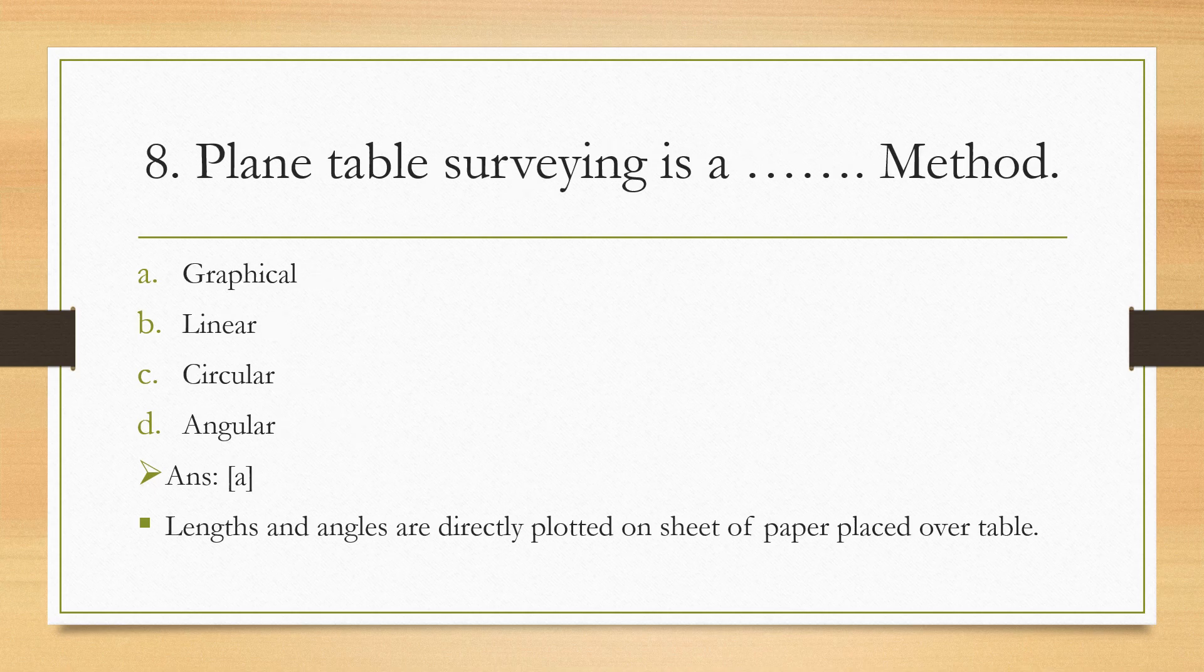Next question: Plane table surveying is what type of method? Dotted method, graphical, linear, circular, or angular? The right answer is graphical method. Actually, in plane table surveying we plot the map or index map of the area by placing a sheet of paper on the plane table and measuring the length and angles using different types of plane table surveying instruments.